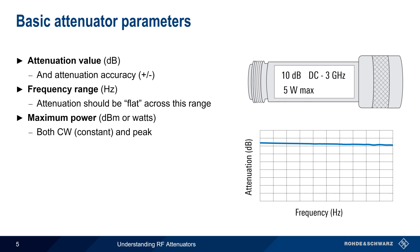Most connectorized attenuators are made to have one of the standard RF impedances of either 50 or 75 ohms. It's important to be sure that the attenuator impedance matches the impedance of the cable and devices it's connected to.